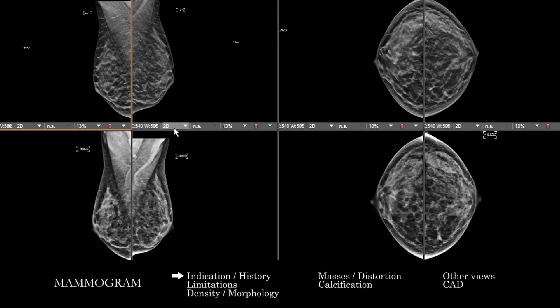Each place you may practice may have different hanging protocols and PACS. In our particular workspace, by convention, the current study is provided initially at the bottom and the prior study is at the top — MLO and CC views. I'll go through the different views and talk about the approach on specific views and image sets.